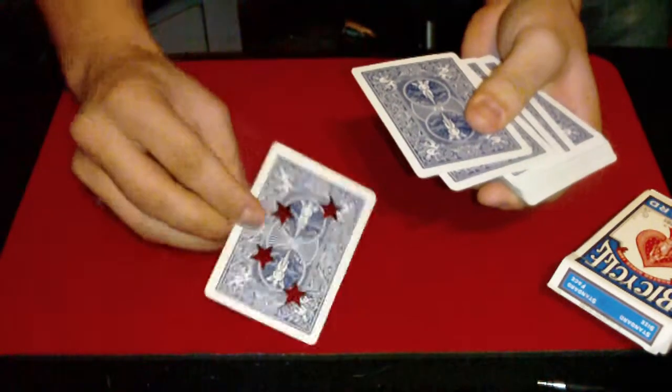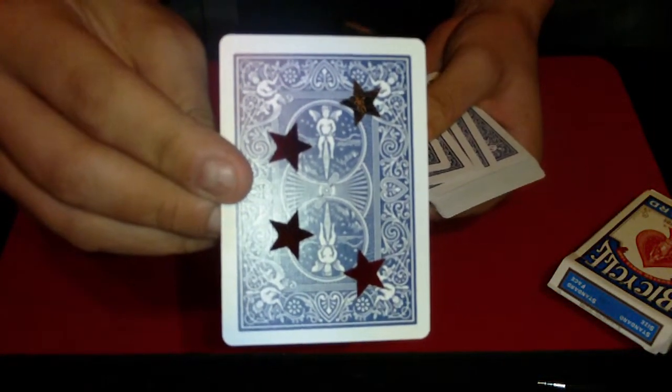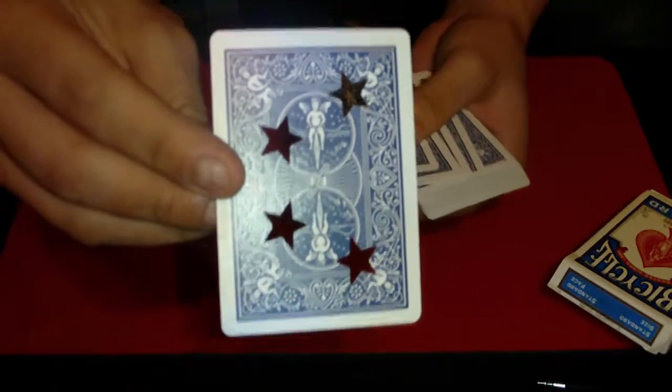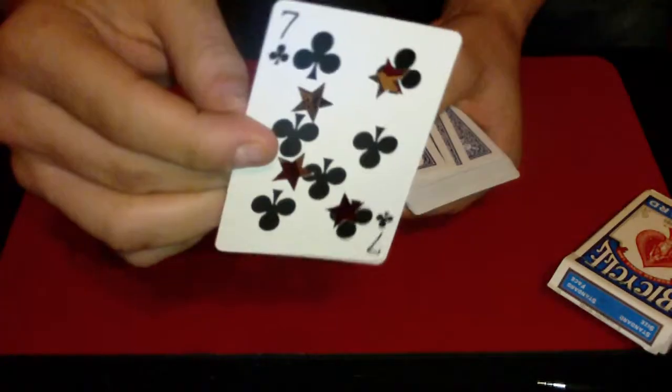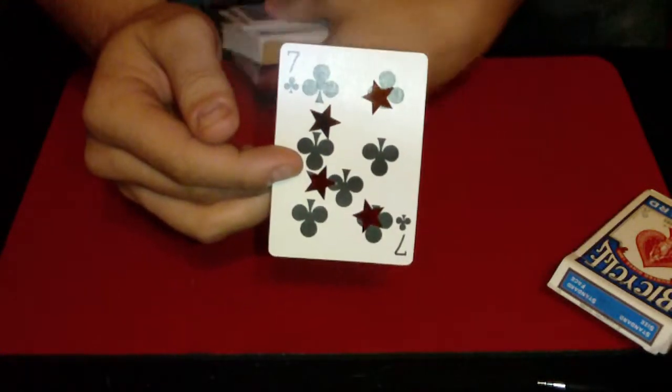There are four stars cut into this card, which is pretty weird because that was the number that they chose. But at the same time, it's also the card that they chose.